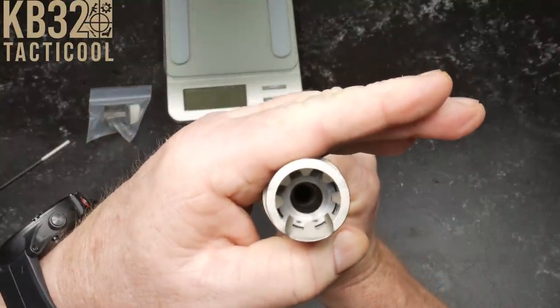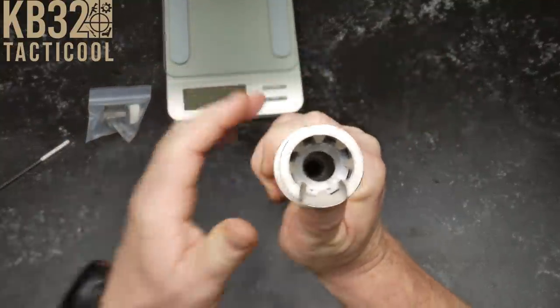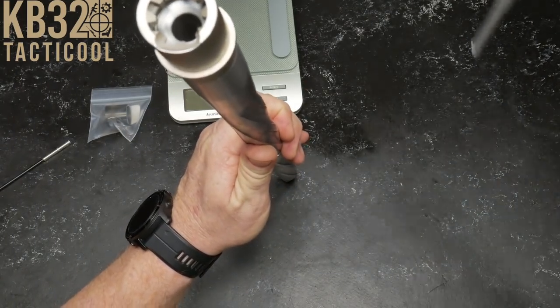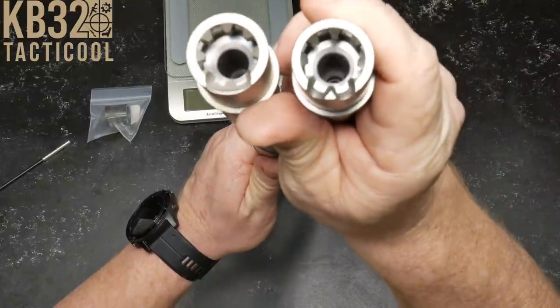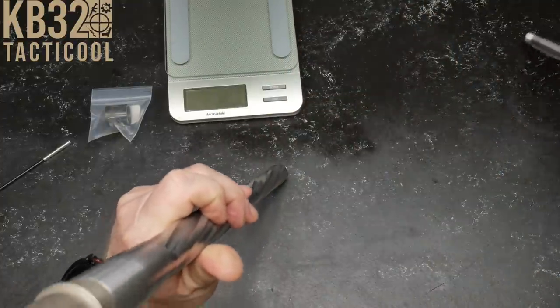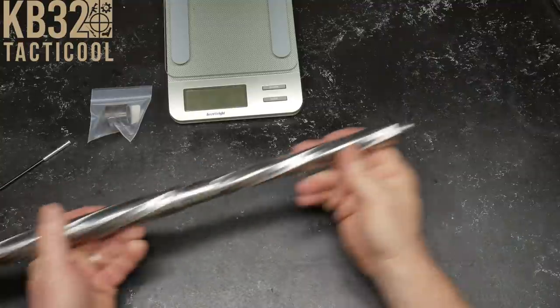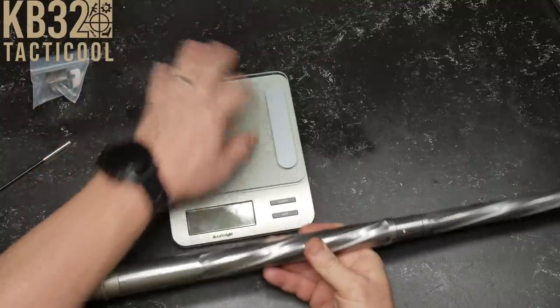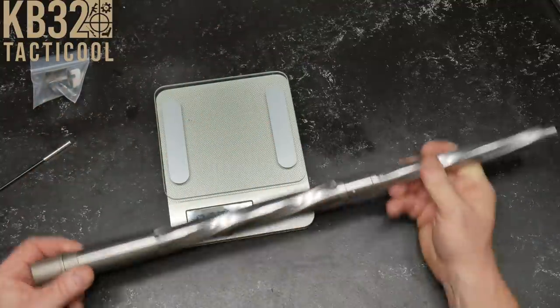Here's the thing that's kind of intriguing to me and I want you guys to see that - we have a single feed ramp. That's new to me, I've never seen that before. Let me show you something. This is a PSA barrel in 6.5 Creedmoor and you've got the feed ramps, they're more traditional like that.